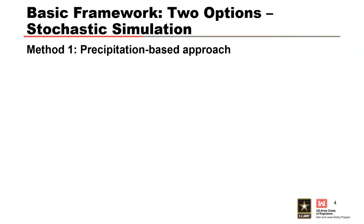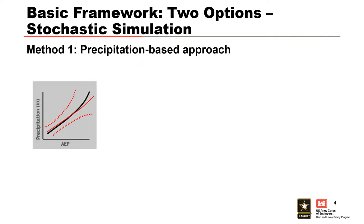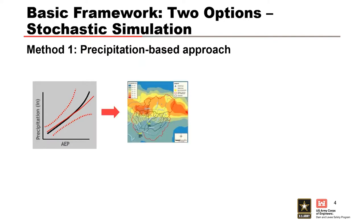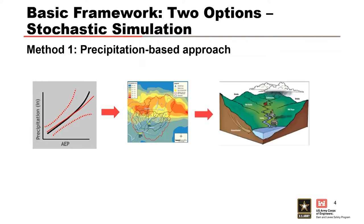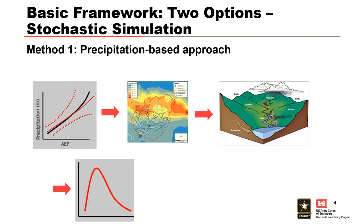Before I get started, I'm going to go over the basic framework of a stochastic simulation used to develop a stage frequency curve. There are really only two options. First, there's the precipitation-based approach. In this method, we sample precipitation volumes from a precipitation frequency curve, scale the sampled precipitation depth to the observed storm shape, and then distribute the precipitation over rainfall runoff models such as HEC-HMS. The results of the modeling are an inflow hydrograph.